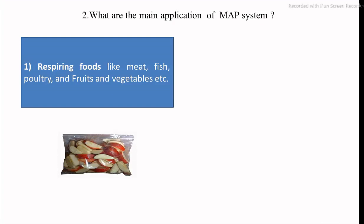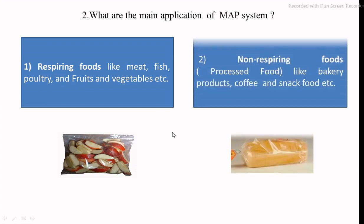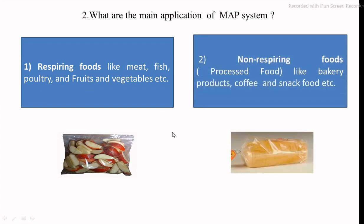The basic application of modified atmospheric packaging and controlled atmospheric packaging involves two groups. The first group includes respiratory foods — meat, fish, poultry, and fruits and vegetables — which are pre-processed, packed into the modified atmosphere packaging system, and then stored in refrigeration or frozen storage for a specific period. The second group includes non-respiratory foods, that means processed foods; all categories of processed foods can be packed into the MAP system to increase the shelf life during handling, storage, and distribution.